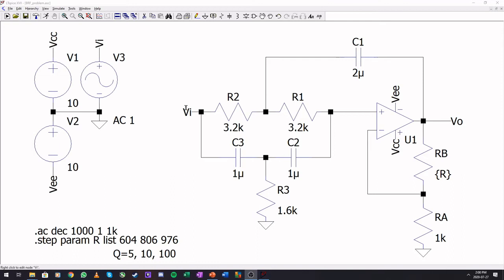In this simulation, I have gone and set up our band reject filter, and I included this resistor RB as a variable. 604 Ohms for Q of 5, 806 for Q of 10, and 976 for Q of 100. The original design was for the Q of 5. The 10 and the 100 is to see the different responses.